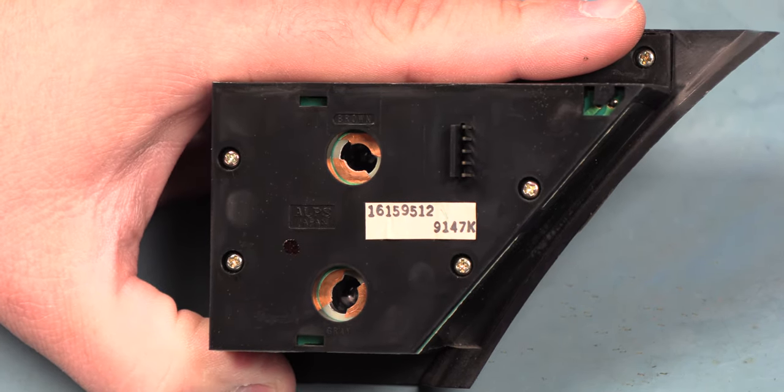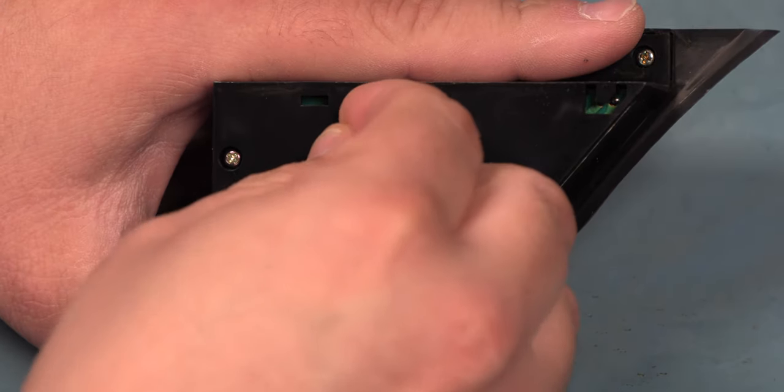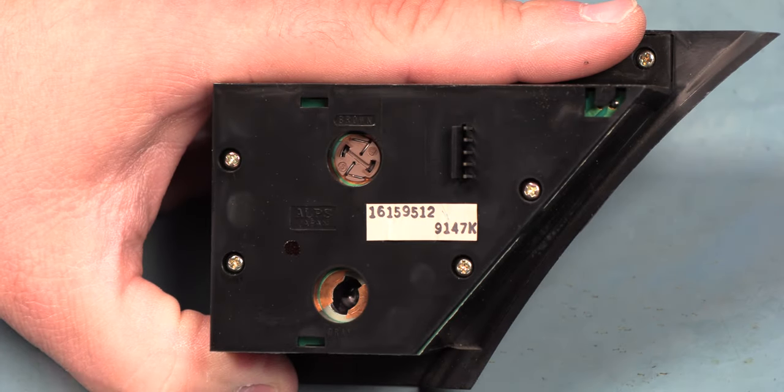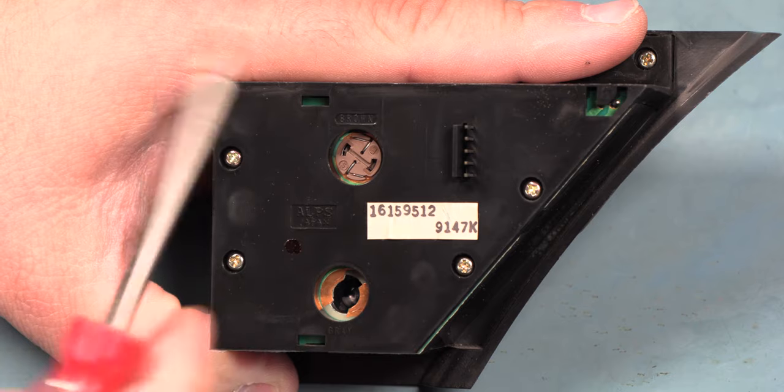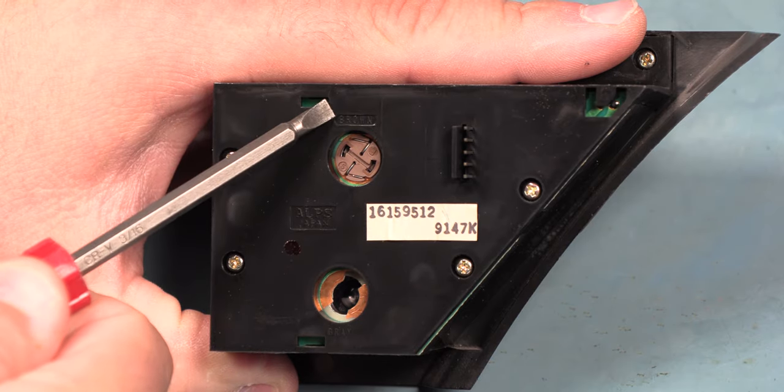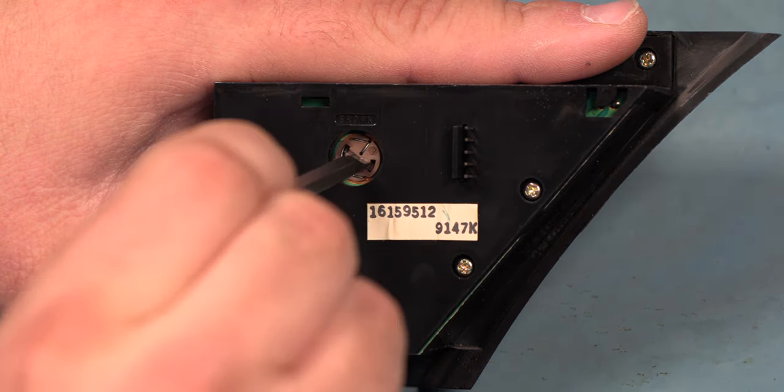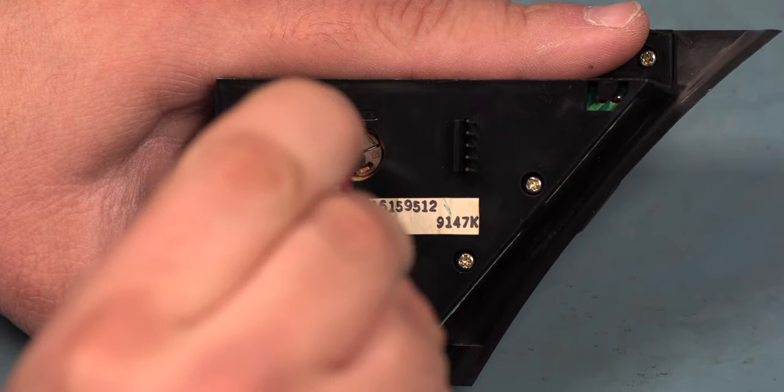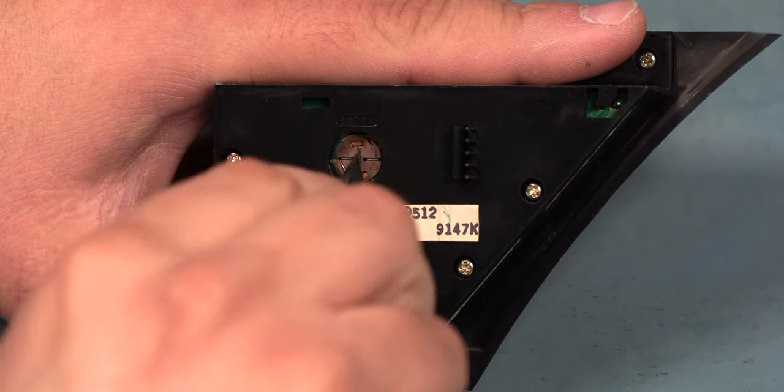To reinstall the new bulbs, we'll place the brown bulb in the top hole marked brown. We'll use a small flat blade screwdriver to rotate it approximately 1/16th of a turn clockwise to lock it in place.